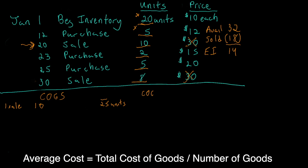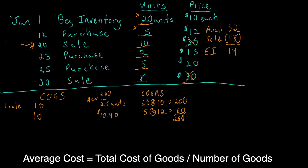Now we calculate the total cost of those 25 units. Cost of goods available for sale is the 20 units at $10, plus the 5 units purchased on the 12th at $12. Our total cost of goods available for sale is $260. Dividing $260 by 25 gives us the average cost of the units available for sale — the average cost is $10.40. So those 10 units sold on the 20th had an average cost of $10.40, and we've successfully found the cost of the first set of units sold.